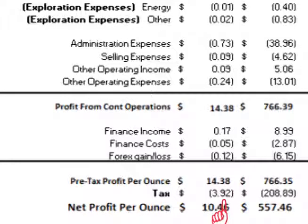Taxes in 2012 were $3.92 per ounce. Net profit per ounce of silver produced in 2012 was $10.46 per ounce.